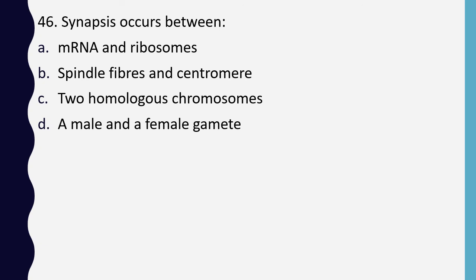Question 46. Synapsis occurs between: mRNA and ribosomes; spindle fiber and centromere; two homologous chromosomes; or a male and a female gamete. The correct answer is option C: two homologous chromosomes.